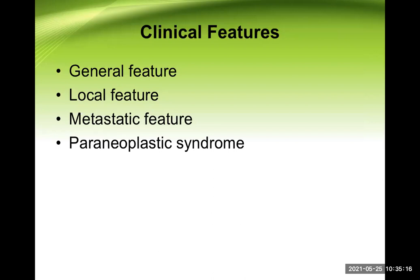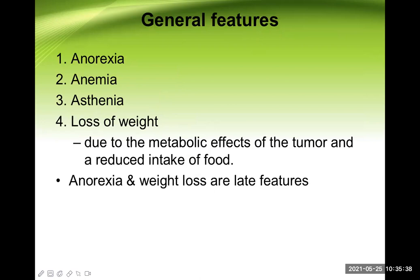Let's move on to the important part — clinical features of carcinoma of the stomach. These are divided into general features, local features, metastatic features, and paraneoplastic syndrome. The common general features are anorexia (loss of appetite), anemia, asthenia (extreme weakness), and loss of weight. These are present in any type of malignancy, so they are known as general or nonspecific features, but they provide a clue to suspect malignancy.